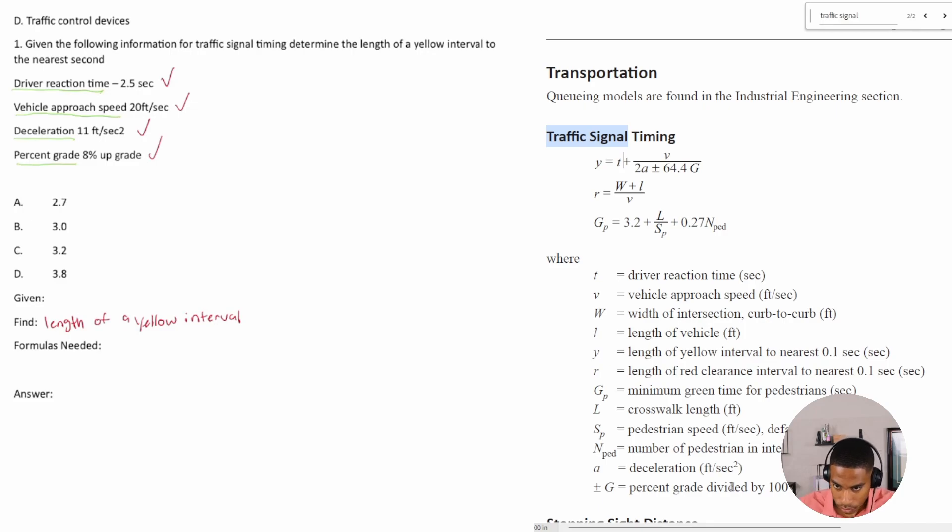So Y is equal to t which is 2.5 plus v which is 20, it's all over your 2 times your 11, and then...